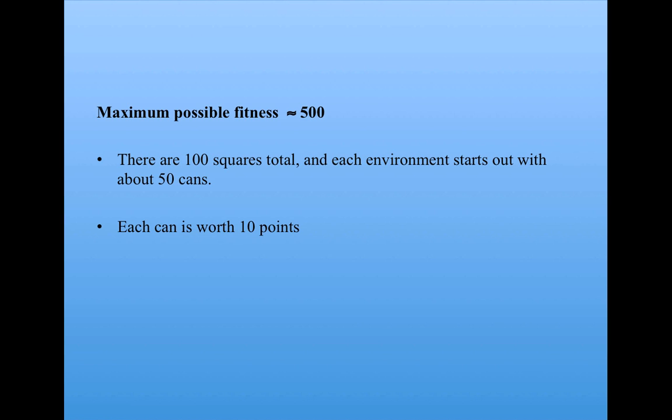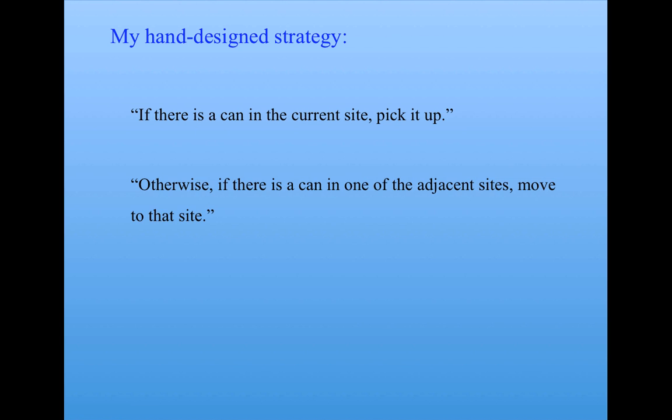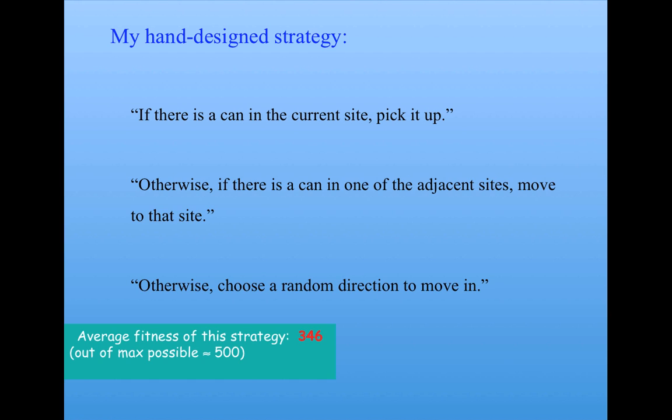So before I ran the GA, I came up with my own hand-designed strategy, which was the simplest reasonable strategy I could think of. Here it is. If there's a can in the current site, pick it up. Otherwise, if there's a can in one of the adjacent sites, move to that site. Otherwise, choose a random direction to move in. So I implemented that strategy as a string of 243 values. Or I wrote a program to do that. Then I let Robbie use that strategy to collect cans in a number of different environments. And I took his average score over a number of different environments. And the average fitness was 346 out of about 500 max possible.